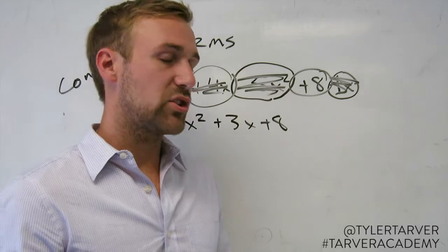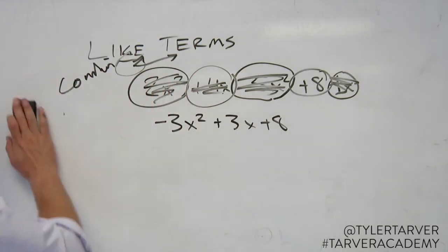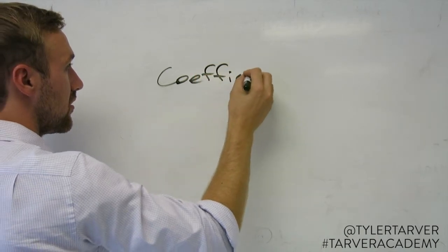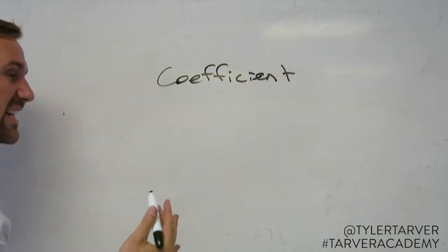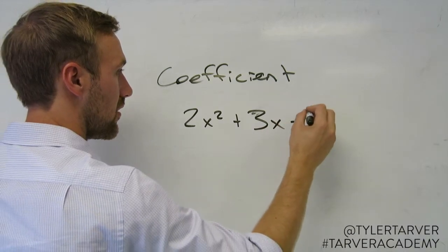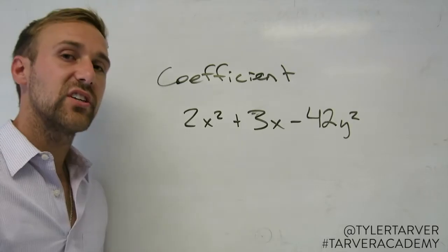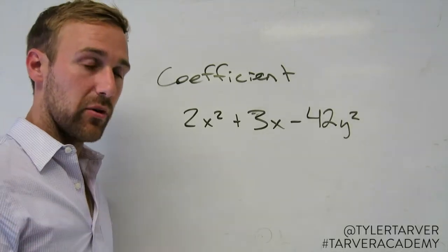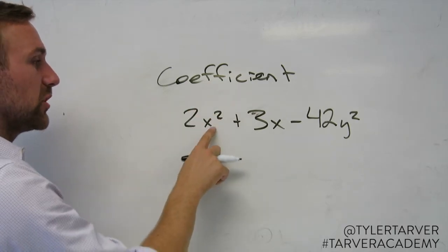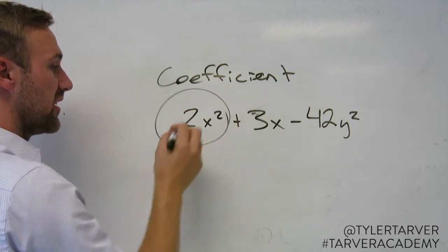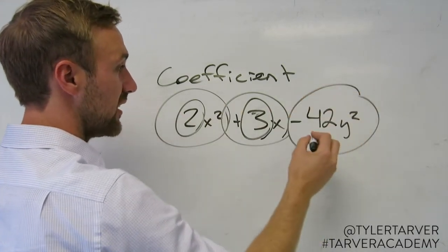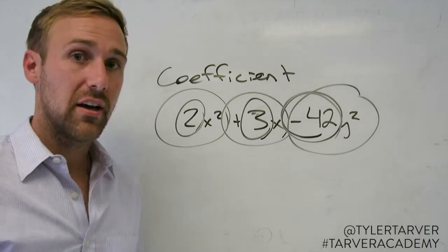The last thing I want to show you is called a coefficient. Let's talk about coefficients. Simply put, easiest terms possible: the coefficient is the number in front of your variable. It's the number in front of the variable. Remember the last problems when we were talking about combining like terms? We cared about these. Now for coefficients, we just care about the number. The coefficient in this term is 2. The coefficient in this one is positive 3. The coefficient in this one is negative 42. Don't forget your signs. And that's simply put what a coefficient is.